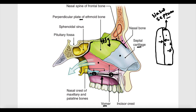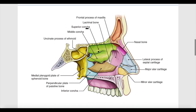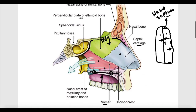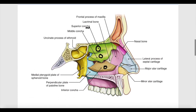The lateral wall of each half of the nasal cavity features three shelf-like processes extending into the nasal cavity. Each shelf is referred to as a concha, giving us three conchae: a superior concha, a middle concha, and an inferior concha. Below each concha we have a meatus: the superior meatus, the middle meatus, and the inferior meatus.